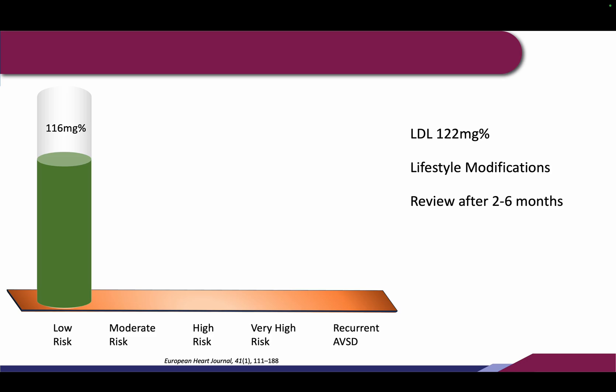In case the cholesterol does not come down to an LDL of 116, we should consider risk modifiers — we should get a calcium score and also Lp(a). If both are done and a risk modifier is present, for example if calcium score is more than 200, then this gentleman is upgraded to a higher risk category. If calcium score is 0, he remains in the low risk category.